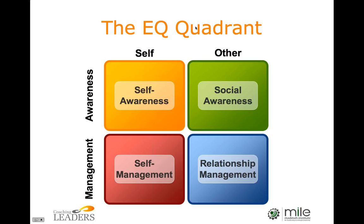Each of these is highly relevant to leadership, but self-awareness is the key — the cornerstone on which the others rest. If you're not aware of your own emotions, you won't be able to manage them because they'll constantly be taking you by surprise. Social awareness will be difficult because the way we recognize emotions in other people involves partially reproducing them within ourselves. And if your self-management is poor, that will make relationship management very difficult.